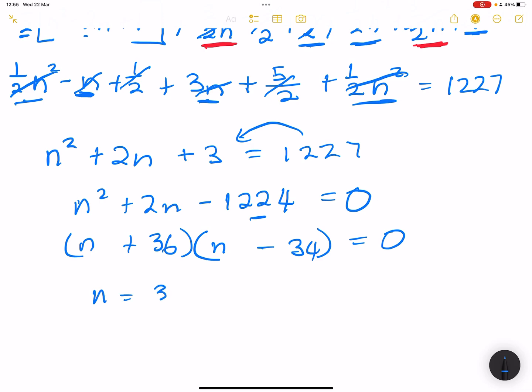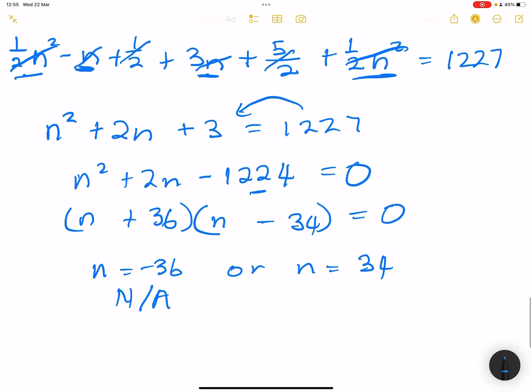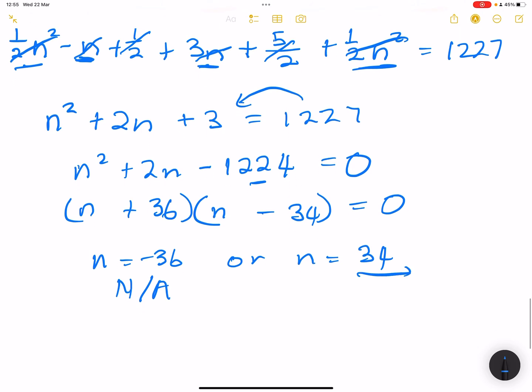So therefore, N is equal to negative 36, or N is equal to 34. Now, obviously, this is not applicable. Why? Because we cannot have N as a negative number. It has to be a natural number. So the answer is 34.